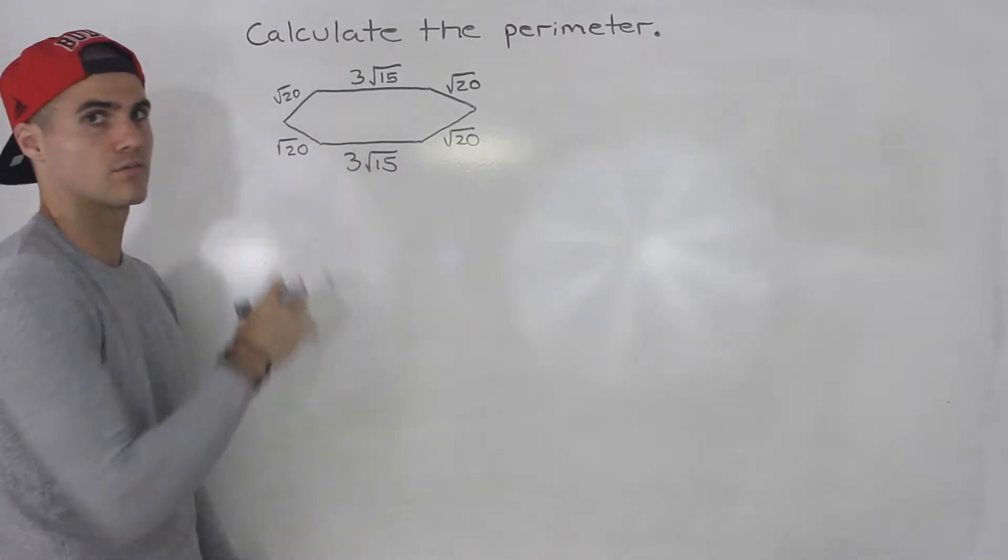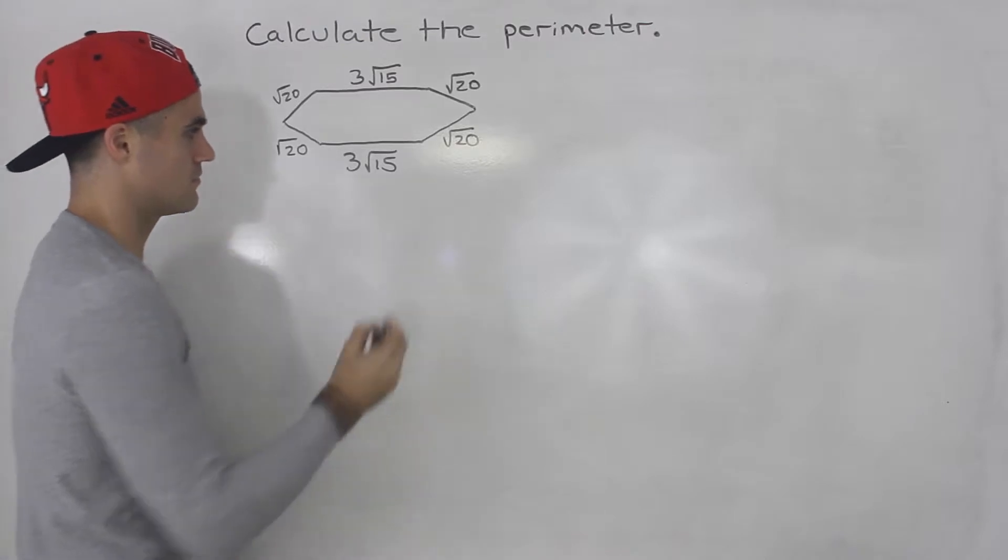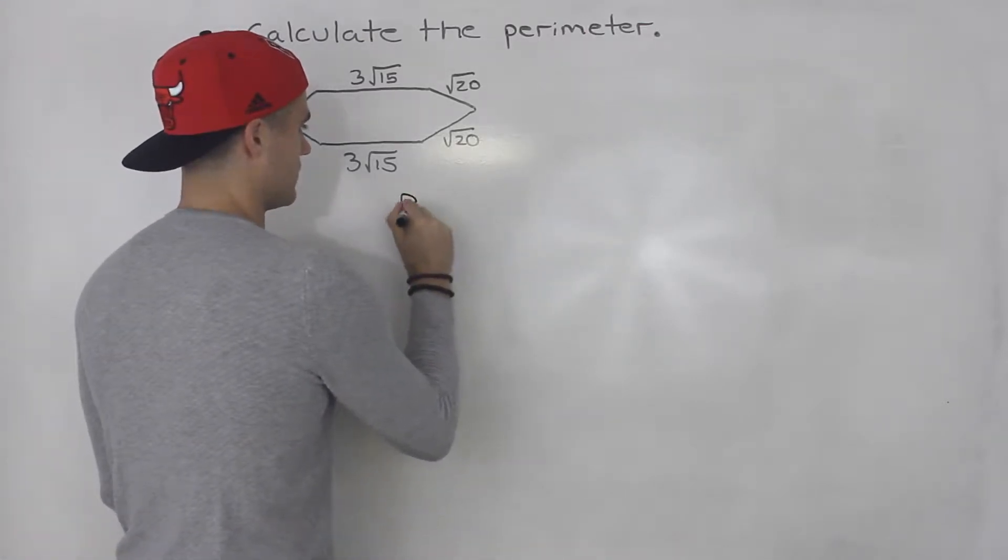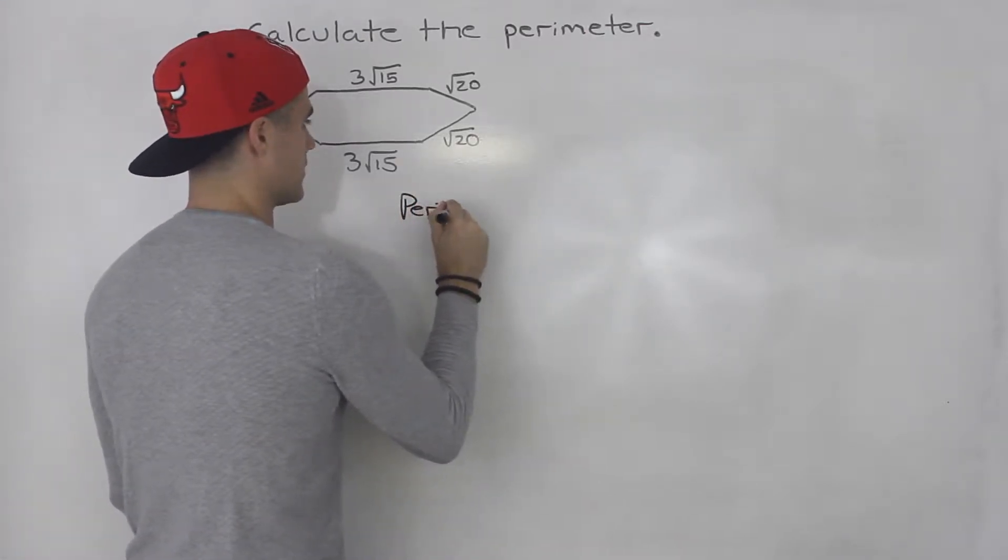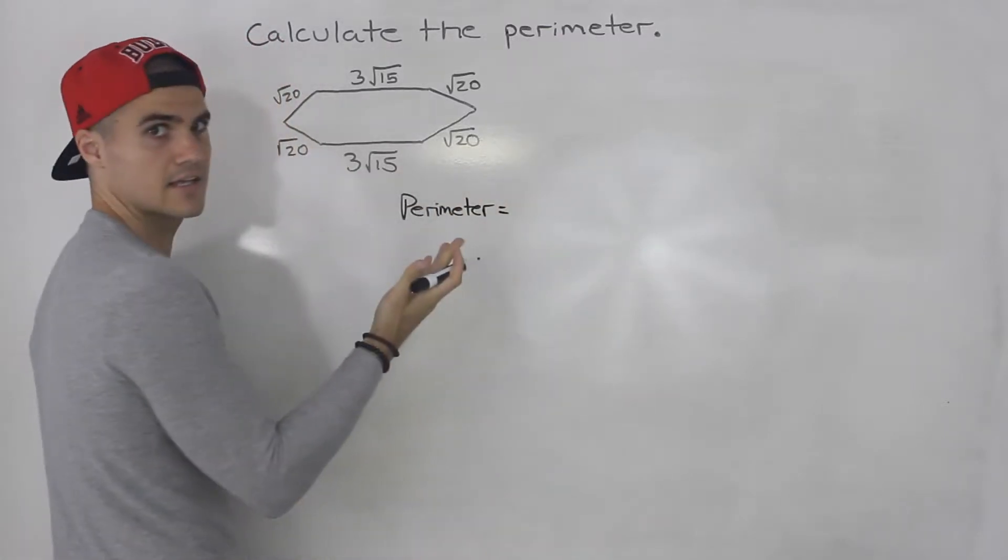So we're given the length of all of the sides. So basically the perimeter is just going to be what? All of the sides added together.